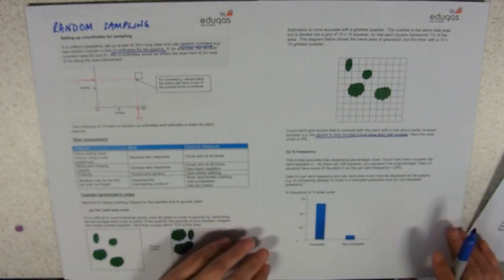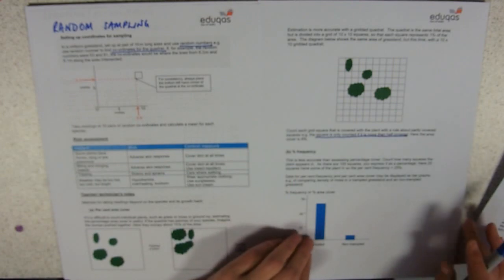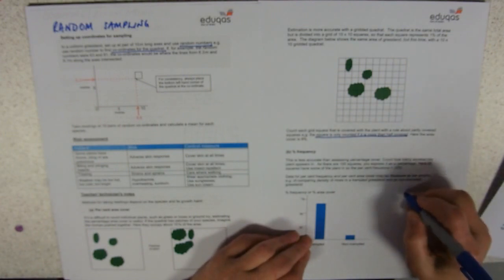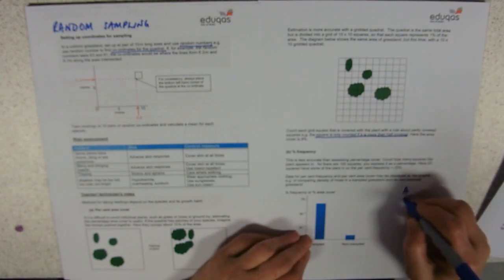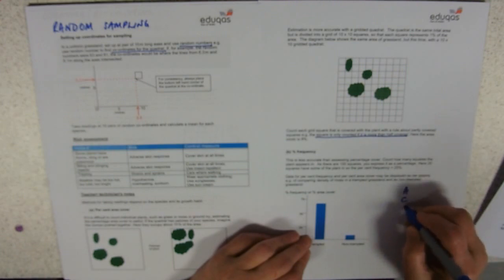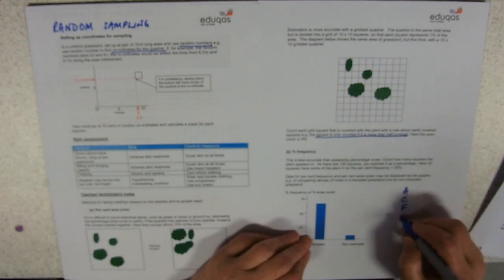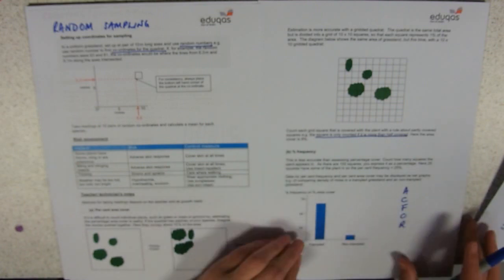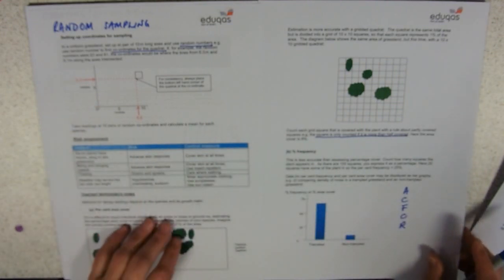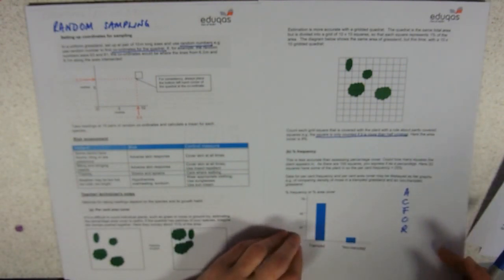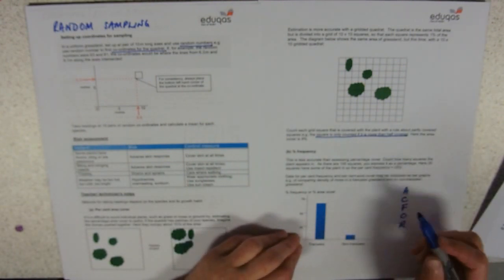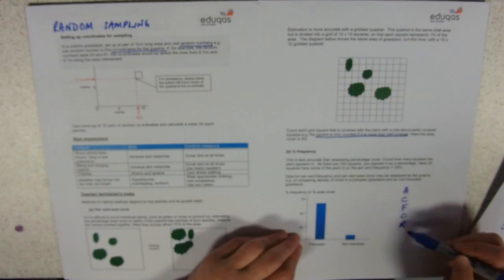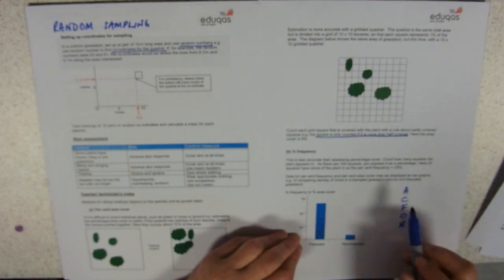You could also use what's called an abundance scale — an ACFOR scale. You could say a species is Abundant, Common, Frequent, found Occasionally, or found Rarely. There are percentage guidances for the ACFOR scale. It's a variation on percentage cover but it's qualitative — a judgement call — rather than quantitative.